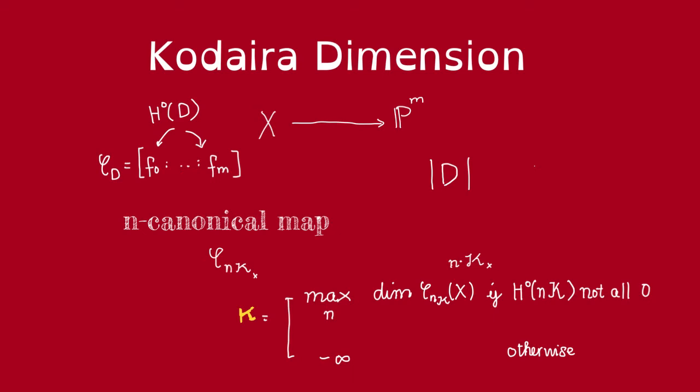If none of these n have non-trivial global section, we just say the Kodaira dimension is minus infinity. Now, it's unfortunate that my notation for kappa looks a lot like K. But this is kappa for Kodaira dimension, and this is Kx for the canonical class.